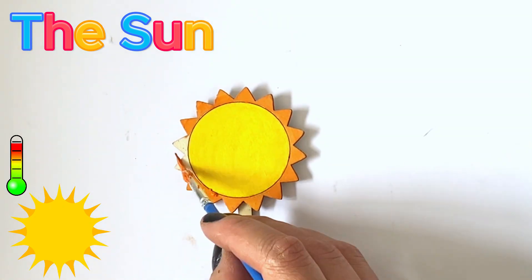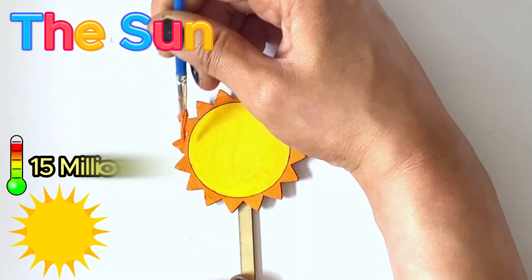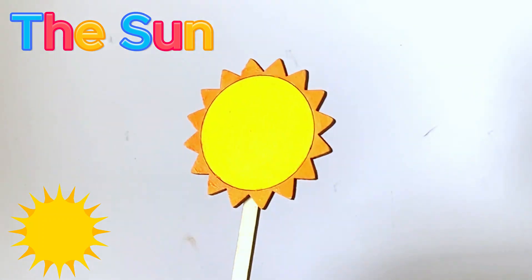And towards the core, temperatures average more than 15 million degrees. And that's our finished Sun.